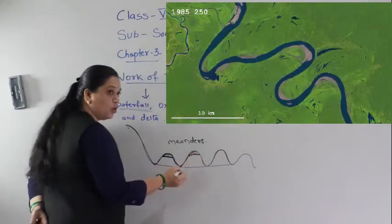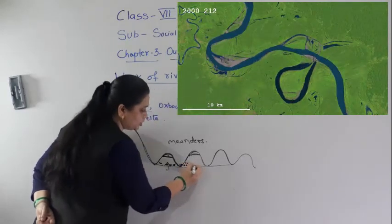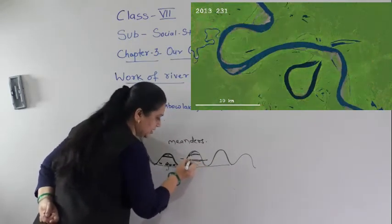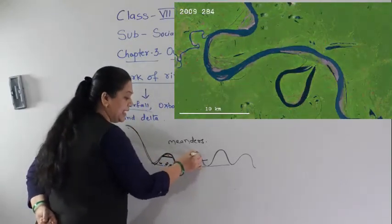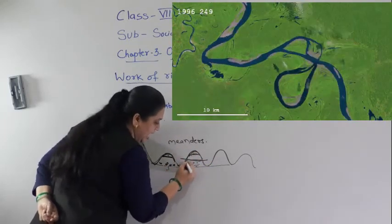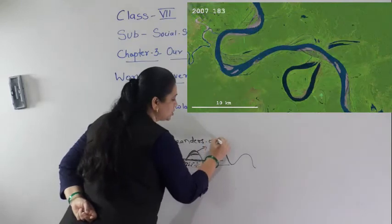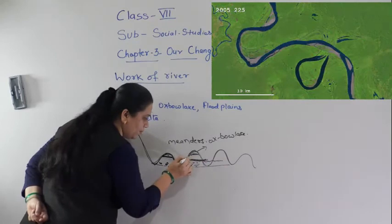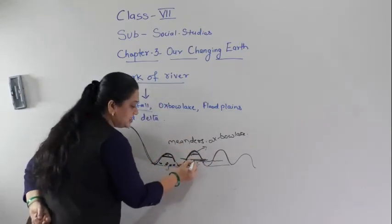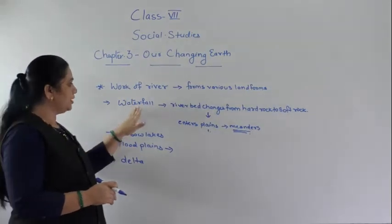The fast-flowing water erodes the river bank on the outer side, while the slow-moving water deposits sediment on the inner side. The eroded and deposited sides come closer together, and eventually this part of the river gets cut off. The river changes its position and the cut-off portion is called an oxbow lake, because it takes the shape of the bow used on an ox. The river then continues flowing in its new direction.